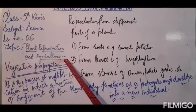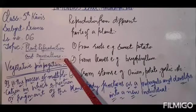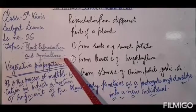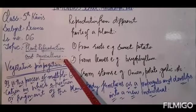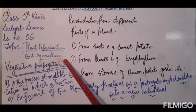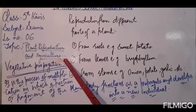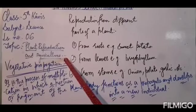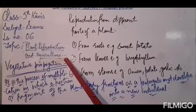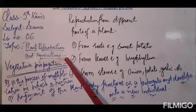So in most plants, a new plant grows from a seed when it is sown into the soil. But in some cases, a new individual grows from the different parts of the parent plant — either from a root, from a stem, or from a leaf. A root may give rise to a new plant, a leaf may give rise to a new plant, and a stem may give rise to a new plant.